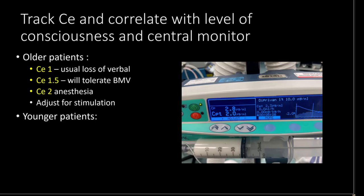What are the things that we track in terms of effect compartment levels? I look for loss of verbal, and we usually see that around 1. Usually at around 1.5 they'll tolerate bag mask ventilation, and at 2 you will have anesthesia. This is more for my cohort of older patients, and you will adjust based on stimulation. For younger patients these numbers will be bigger — probably around three or four, sometimes five — and that's why it's important to use your cerebral monitoring, especially if you have a paralyzed patient, so you have some sense of what's happening during stimulation.